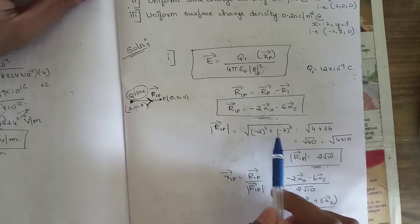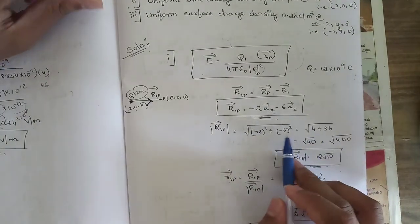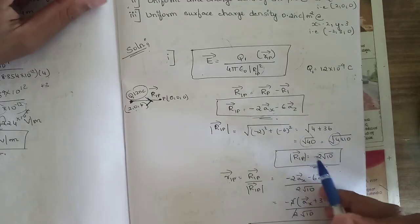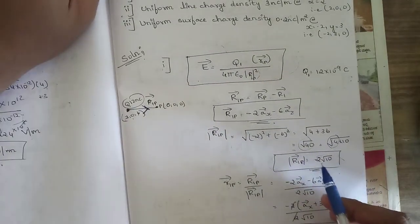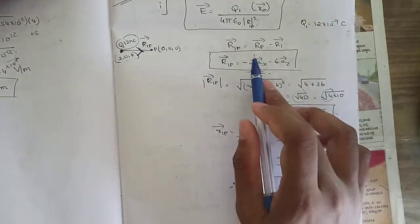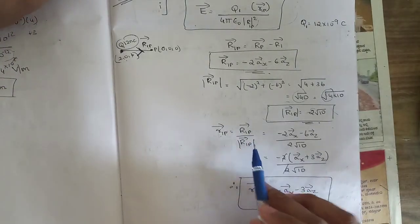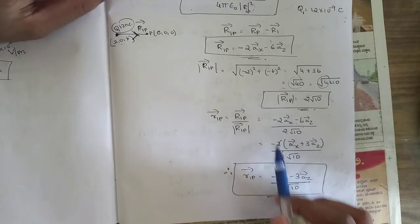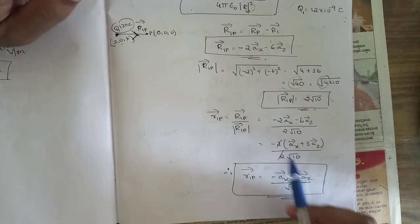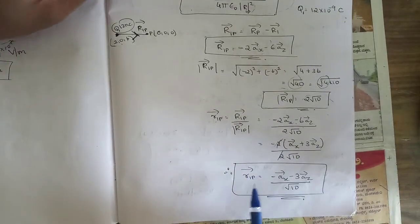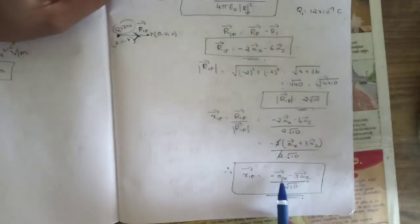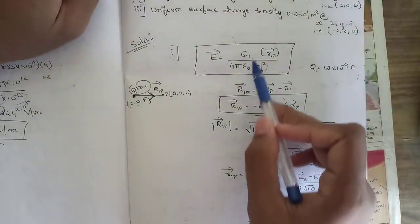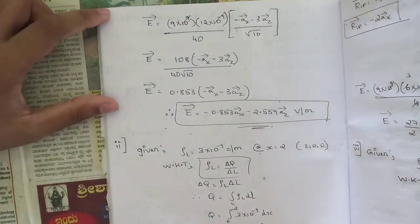The unit vector r̂₁p equals r₁p divided by its magnitude: (−2ax − 6az) divided by 2√10. Taking 2 common from the numerator and cancelling, the unit vector becomes (−ax − 3az) divided by √10. Substituting all data into E: 1/(4πε₀) equals 9 into 10⁹, Q is 12 into 10⁻⁹, and the magnitude squared is 40.